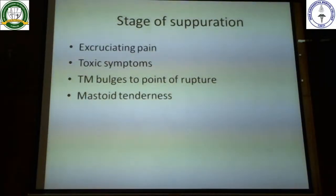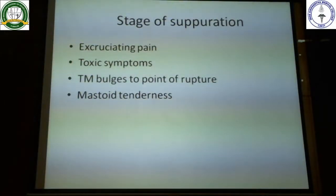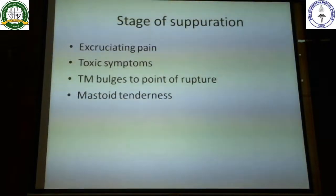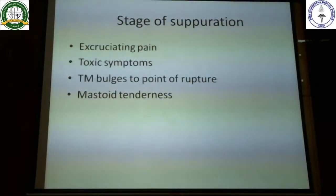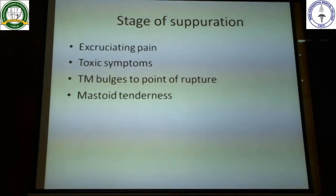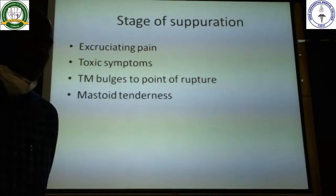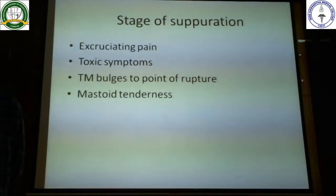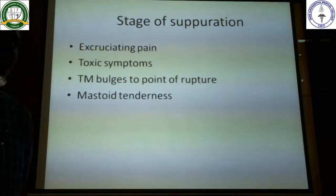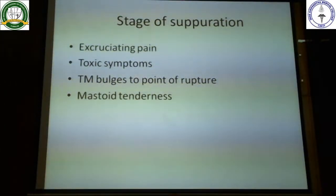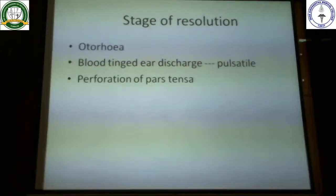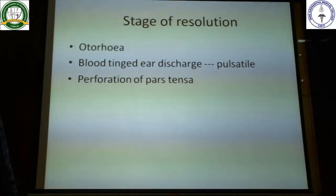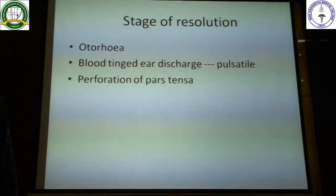Stage 3 — Stage of Suppuration: pain keeps increasing; the baby is inconsolable, and an adult will describe excruciating pain unlike anything experienced before. There are toxic symptoms including very severe high-grade fever. The tympanic membrane bulges and may rupture. Since infection is not limited to the middle ear but involves the middle ear cleft, once it reaches the mastoid, there will be mastoid tenderness — pressing over the mastoid bone causes the patient to wince in pain.